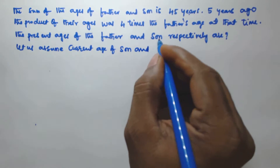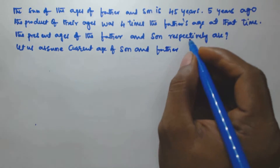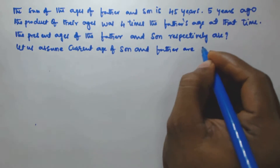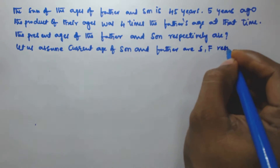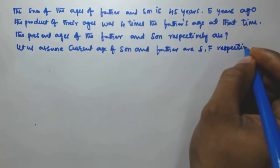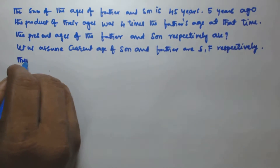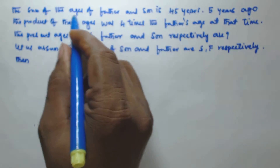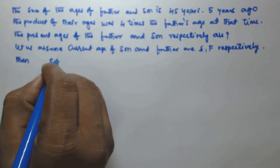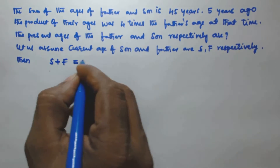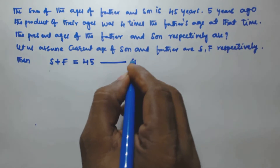Let us assume the current ages of son and father are s and f respectively. It is given that the sum of the ages of the father and son is 45, so s plus f is equal to 45. Let us call this equation one.